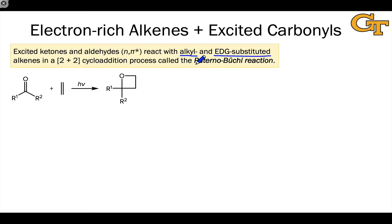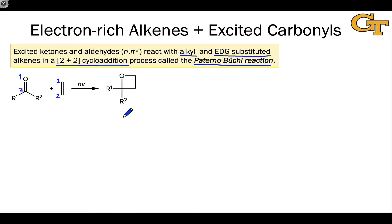This is a fairly famous reaction known as the Paternò-Büchi reaction. It fits our nomenclature pattern of a 2+2 cycloaddition: a 2-atom pi system in the carbonyl and a 2-atom pi system on the alkene side add together to give a 4-membered ring. That doesn't mean it's always concerted; it just means we end up with the combination of two 2-atom pi systems to form the product, which is a four-membered ring containing one oxygen known as an oxetane.